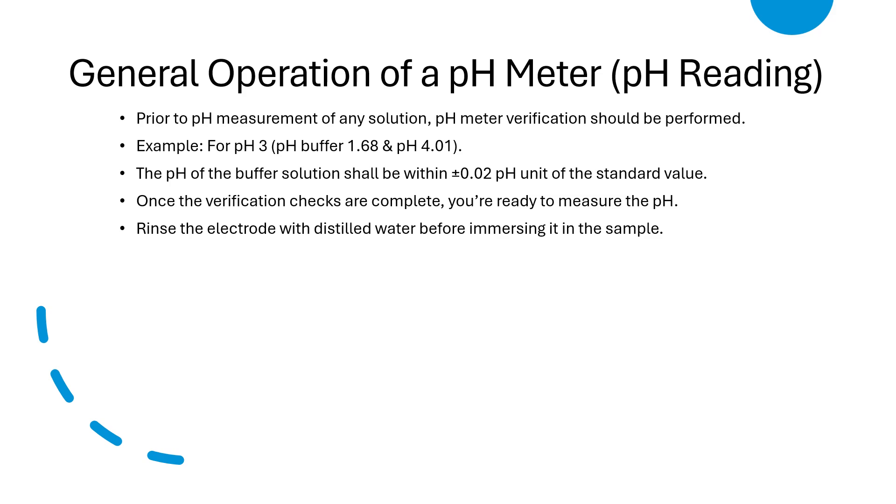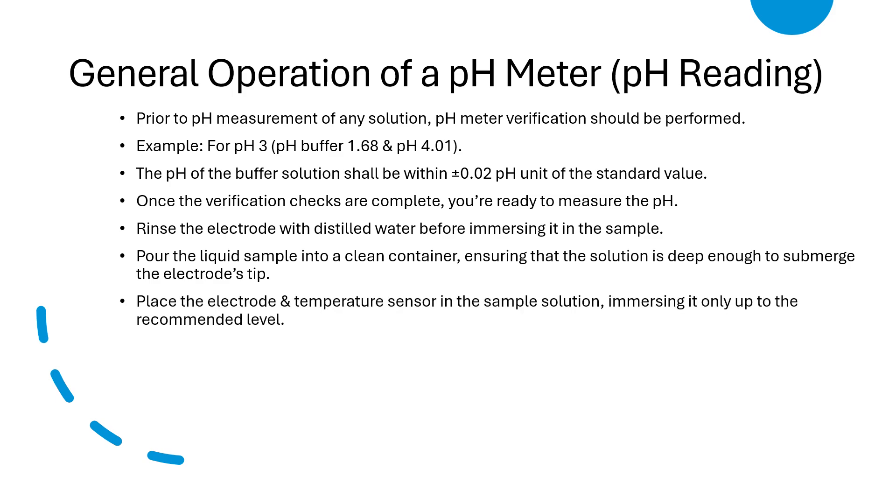Pour the liquid sample into a clean container, ensuring that the solution is deep enough to submerge the electrode tips. That means the electrode should be properly dipped into the solution. Then place the electrode and temperature sensor in the sample solution, immersing it only up to the recommended level.